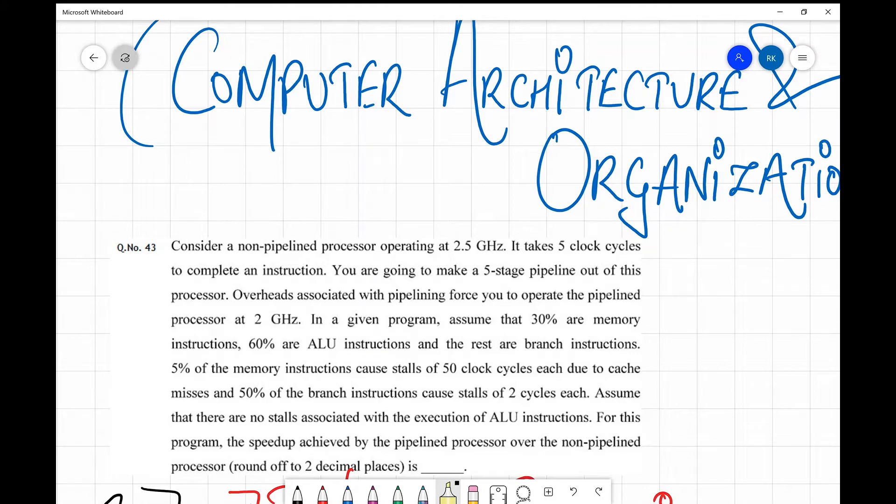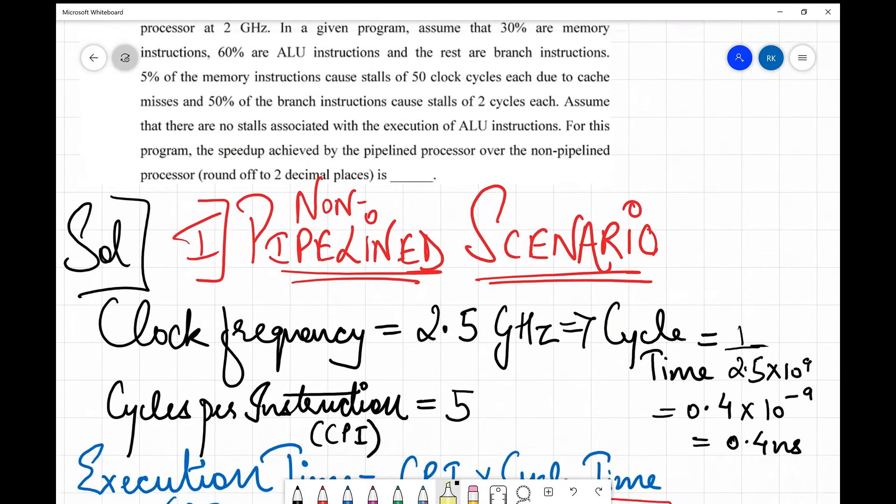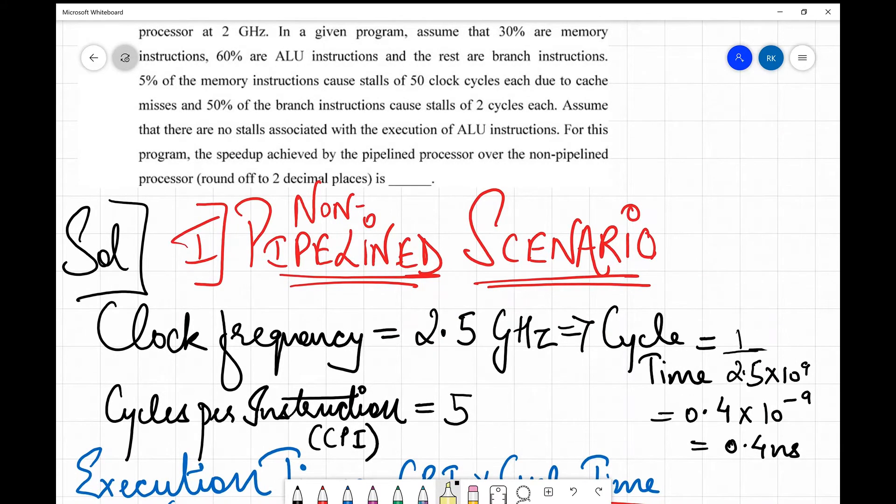It is given that in a non-pipelined processor operating at 2.5 gigahertz - so this is the clock speed for this non-pipelined processor. Then it says that it takes five clock cycles to complete an instruction, so cycles per instruction is given as five.